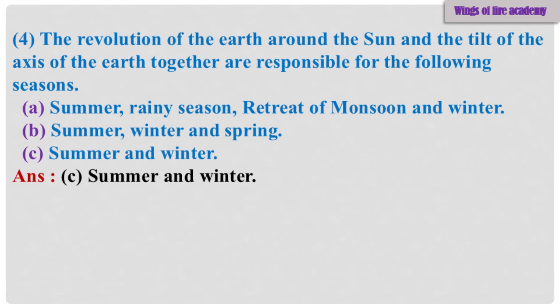Sub-Question 4: The revolution of the earth around the sun and the tilt of the axis of the earth together are responsible for the following seasons — A. Summer, Rainy Season, Retreat of Monsoon and Winter. B. Summer, Winter and Spring. C. Summer and Winter. Answer: C. Summer and Winter.